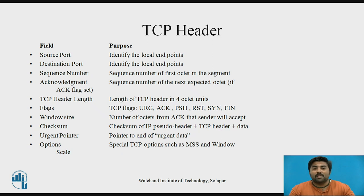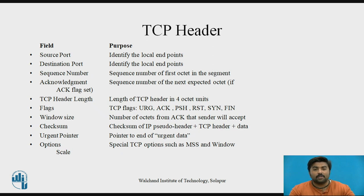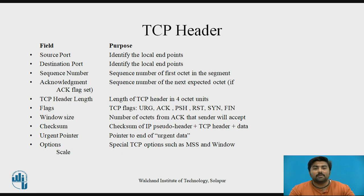The window size field indicates the number of octets from the acknowledgement that the sender will accept. The checksum covers the TCP segment, the TCP header, and the TCP data — it is a mandatory field that must be calculated by the sender and verified by the receiver. The options field includes the maximum segment size option, called the MSS. Each end of the connection normally specifies this option on the first segment exchanged, indicating the maximum size segment the sender wants to receive. The data portion of a TCP segment is optional.